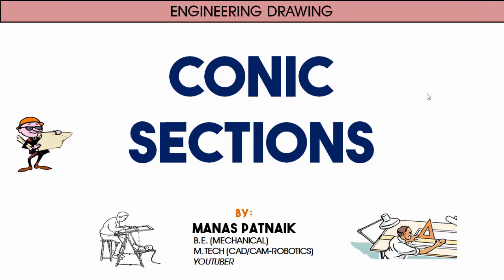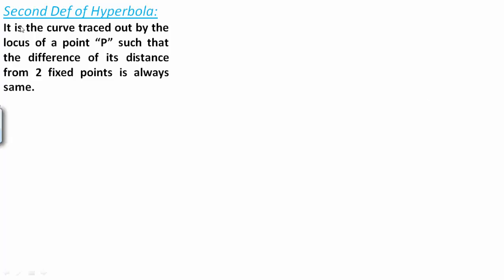Hi there guys, this is your friend and tutor Manus. Today in this session I'm going to talk about the second definition for hyperbola and based on that we're going to be taking up one problem. So it says it is the curve traced out by the locus of a point P such that the difference of its distances from two fixed points is always constant. We're going to be assuming those two fixed points are named F1 and F2.